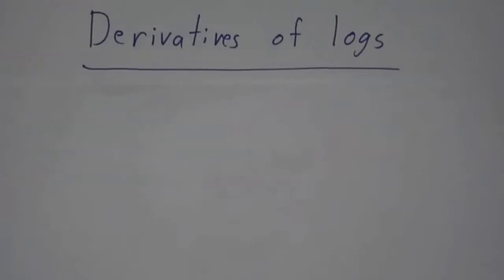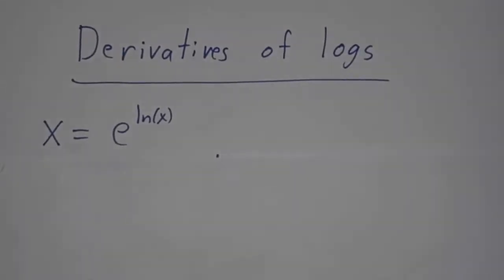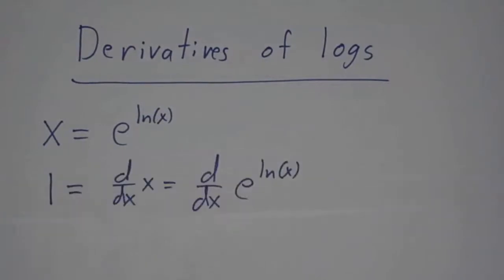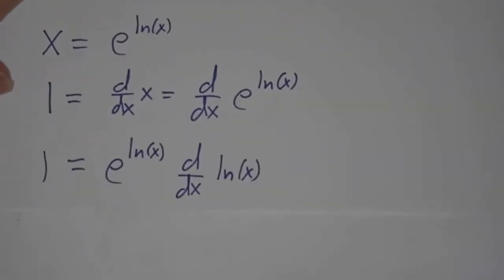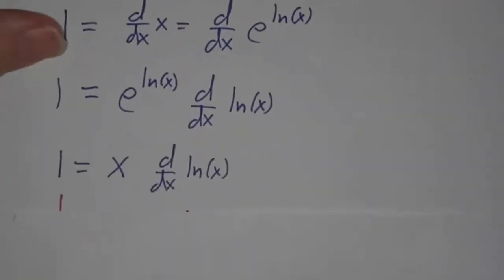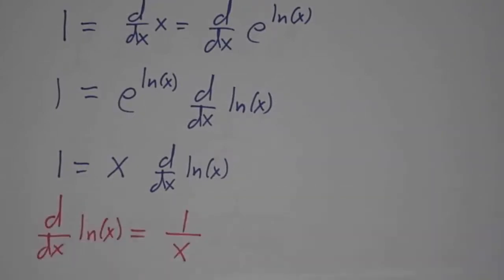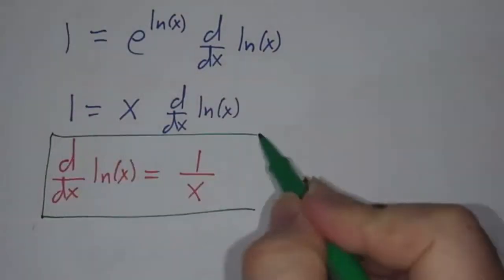Now that we know the derivatives of exponentials, let's figure out the derivatives of logs. We start with the fact that x is e to the natural log of x — a funny way to write x, but it's legal. So the derivative of x has to be the derivative of e to the natural log of x. That means 1 equals e to the log x times the derivative of the natural log of x. And e to the log x is just x. So 1 is x times the derivative of the natural log of x. Dividing both sides by x, the derivative of the natural log is 1 over x.